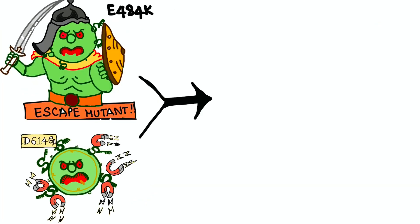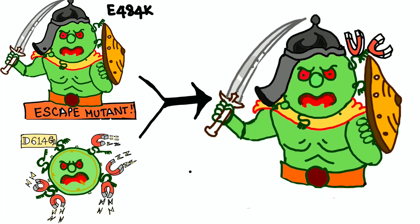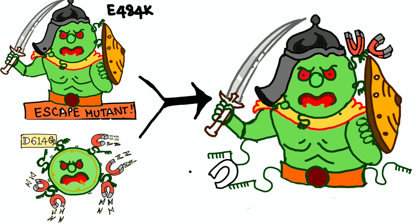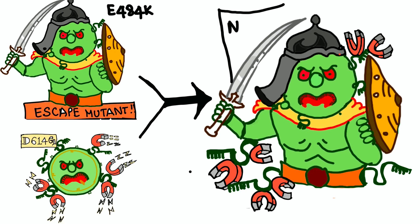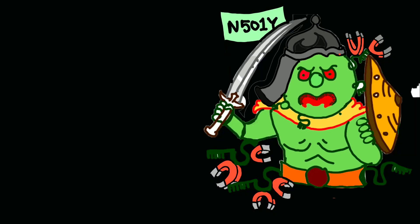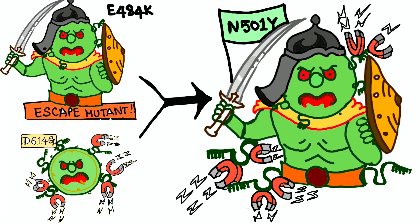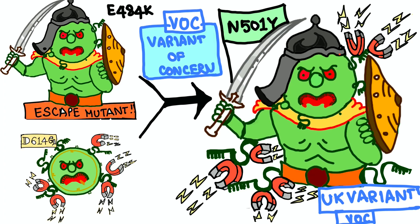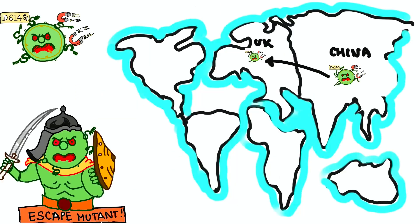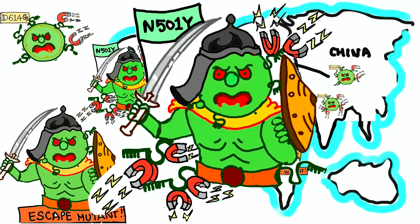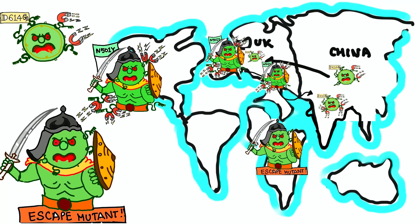What will happen if super laziness is combined with intelligence? Won't it be destructive? Yes — that is the N501Y mutation: a combination of E484K with D614G, meaning multiple magnets attracting to the ACE2 receptor with multiple shields protecting it from the immune system. This is the variant of concern. These escape mutants actually originated from South Africa and started spreading towards India, which is now harboring all the destructive variants of coronavirus.